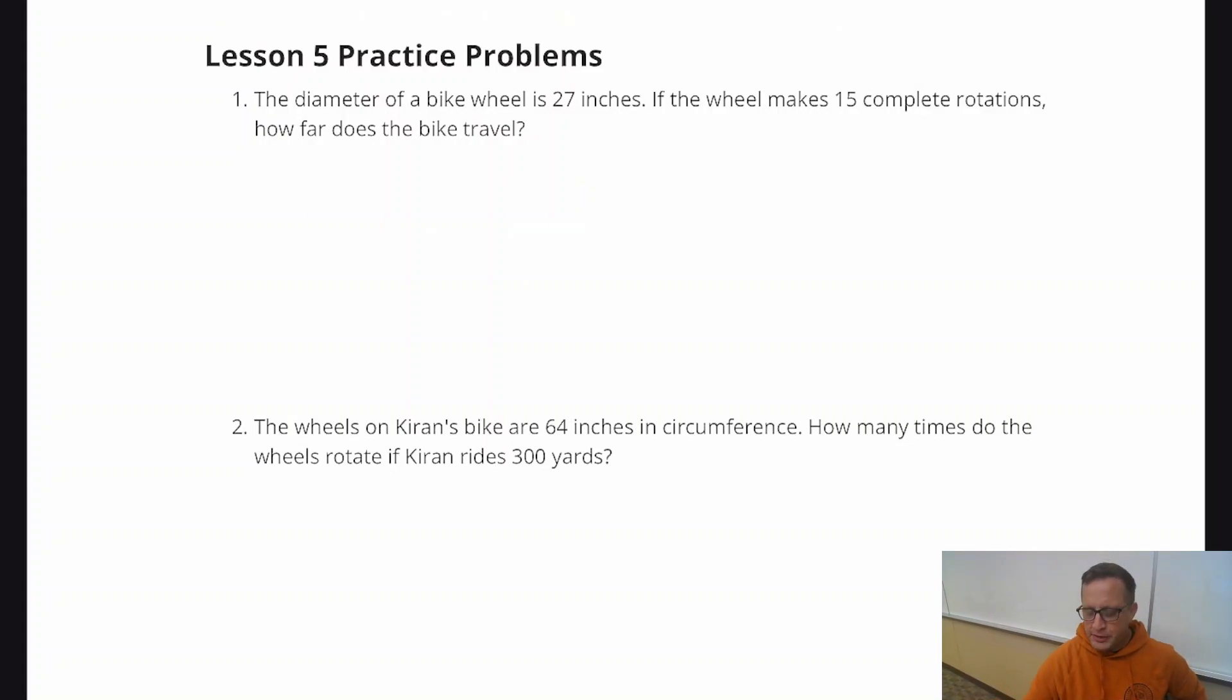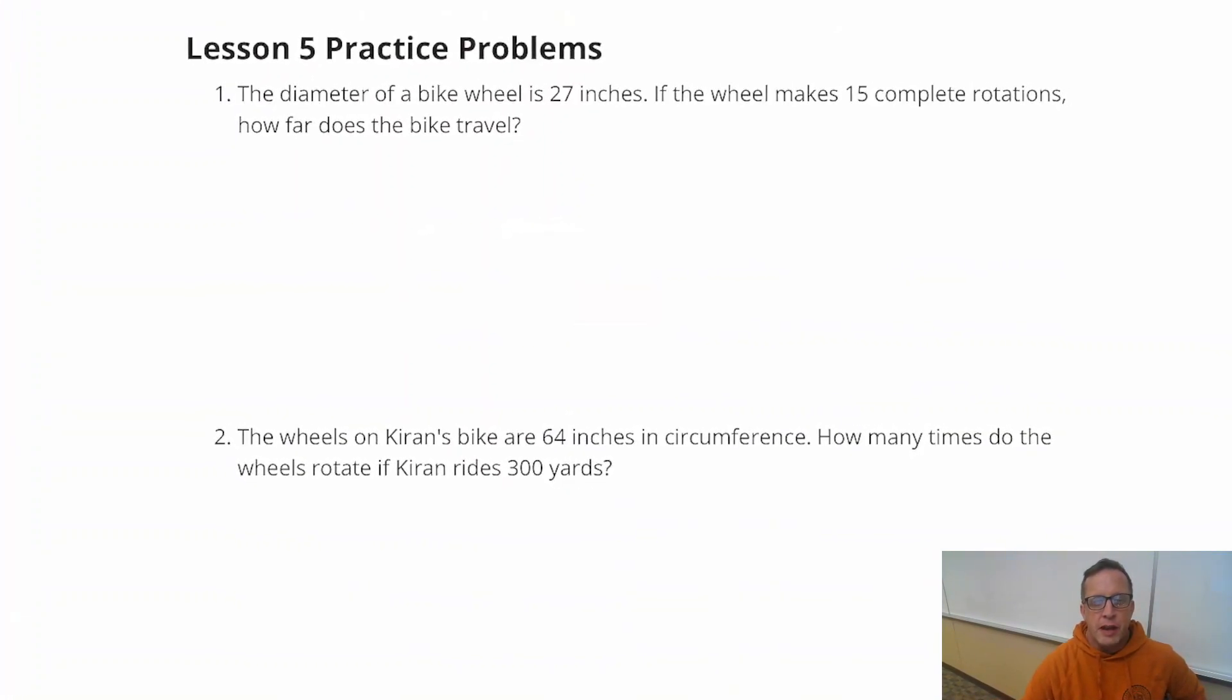Let's go ahead and start on these lesson 5 practice problems. We've got for number one, it says the diameter of a bike wheel is 27 inches. If the wheel makes 15 complete rotations, how far does the bike travel? So the diameter of the wheel, it's going to be important for us to find the circumference of this wheel.